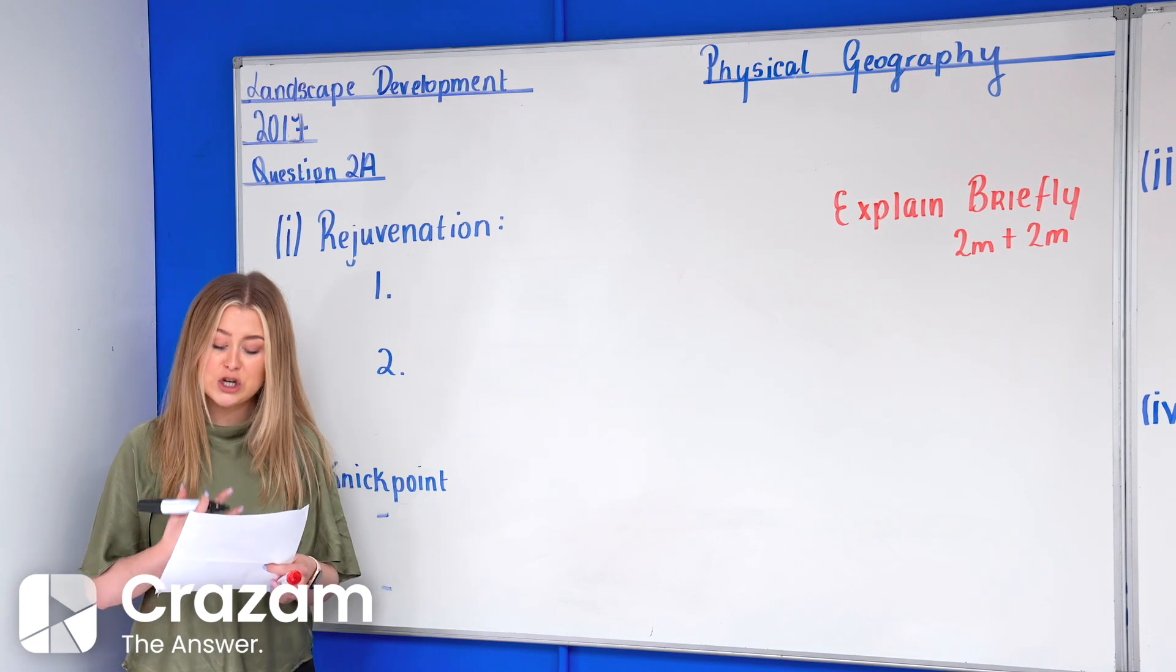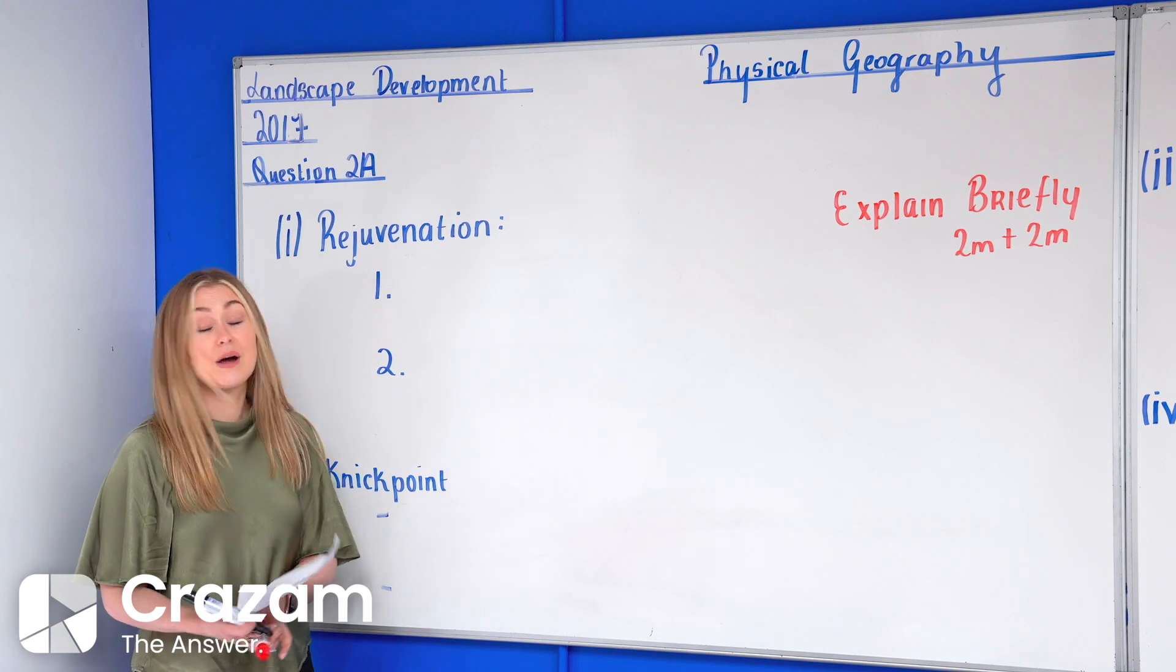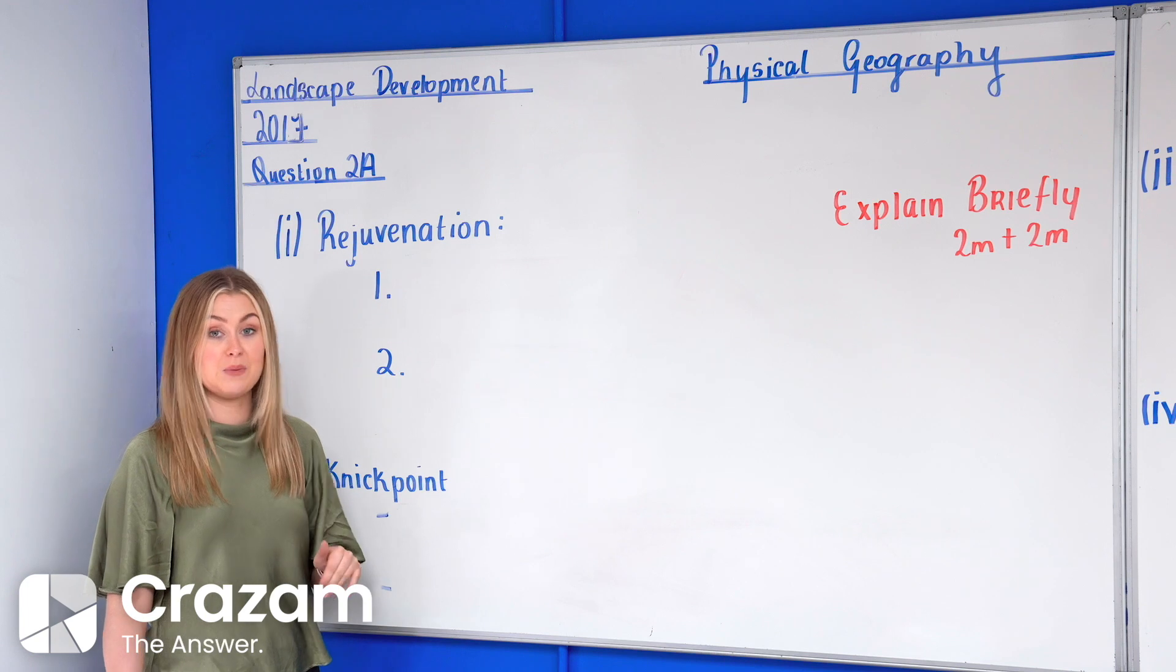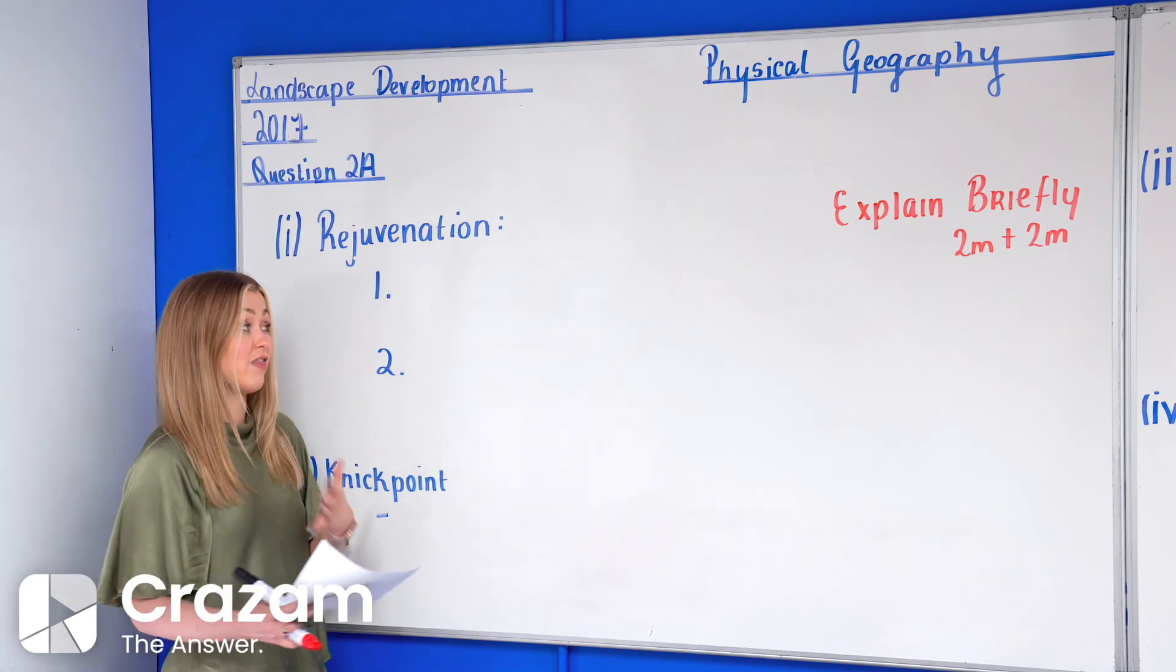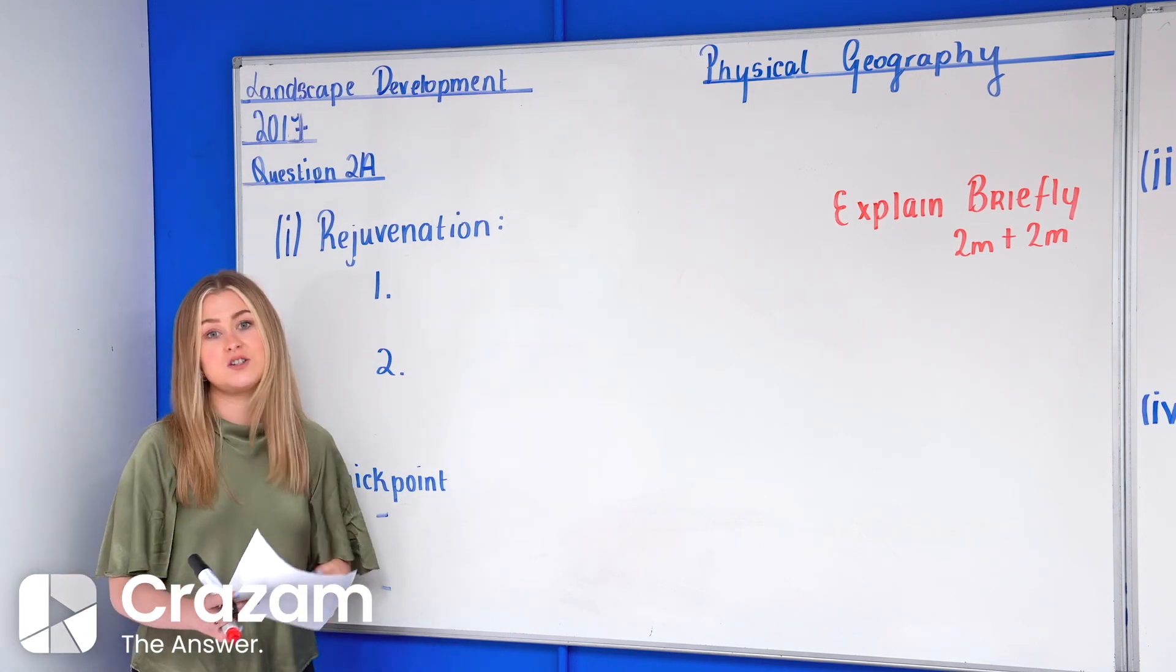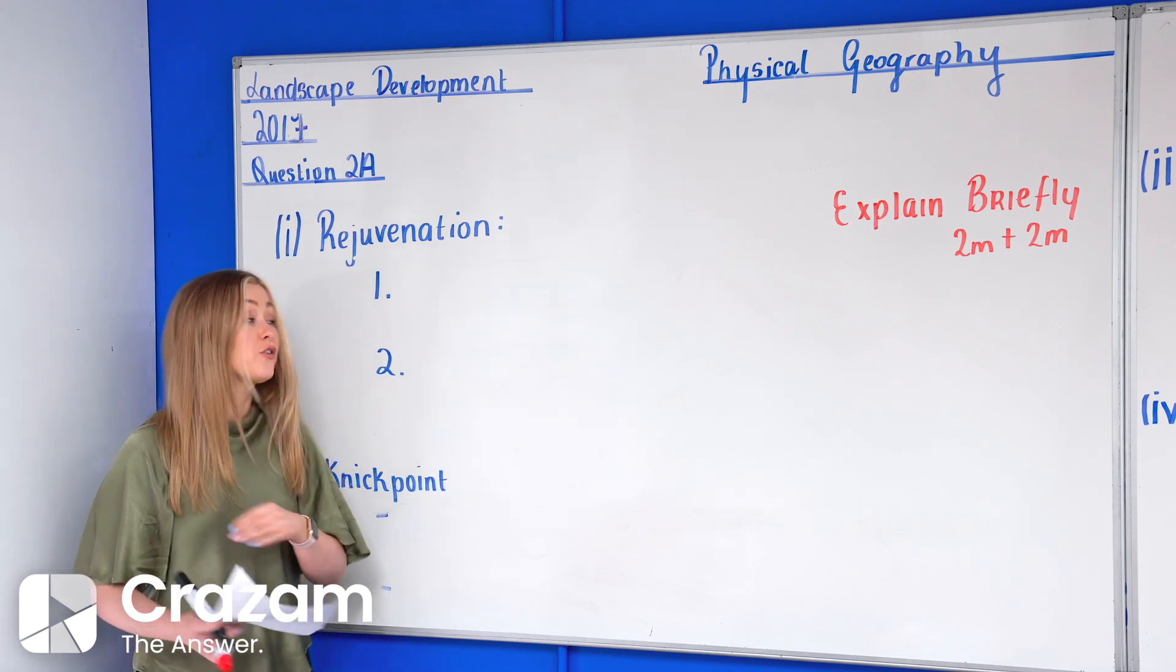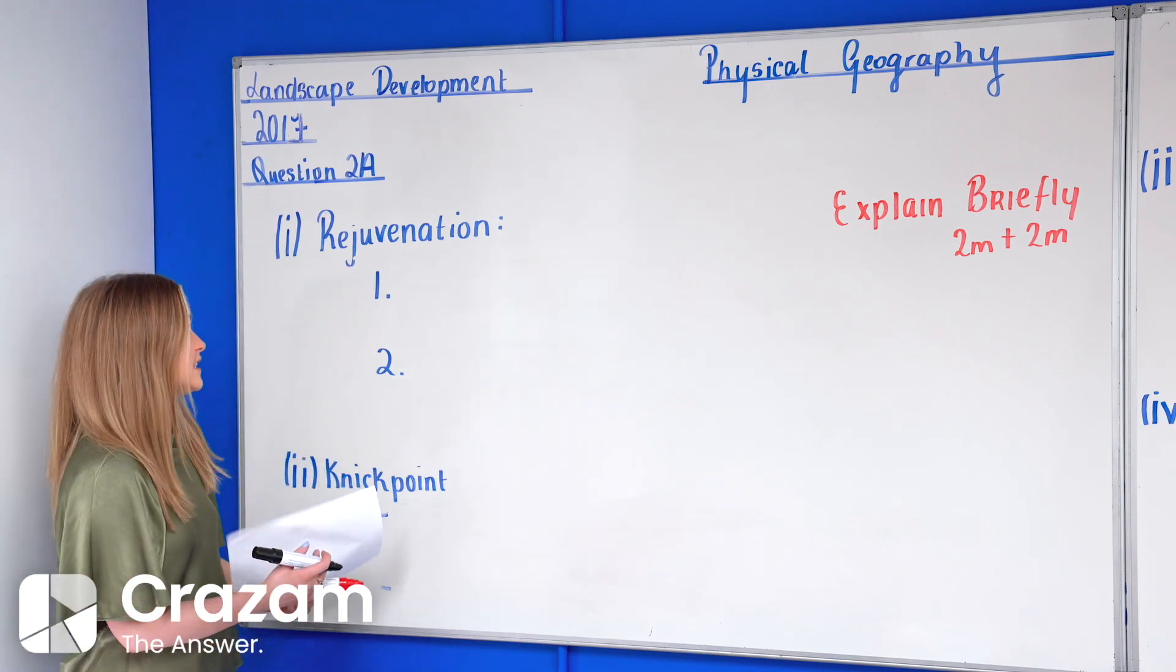Part number one: Explain briefly two reasons why river rejuvenation occurs. A quick reminder, the words explain briefly or briefly explain means two marks plus two marks. So our examiner wants us to expand on this. Actually there's eight marks in total going for this question, which is quite unusual.